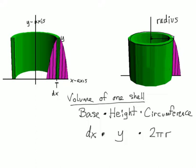To get our variables in terms of x, we will replace y with f(x), since the graph is y equals f(x), and we will replace the radius with x, since it's measuring the horizontal distance from the y-axis out to the graph.